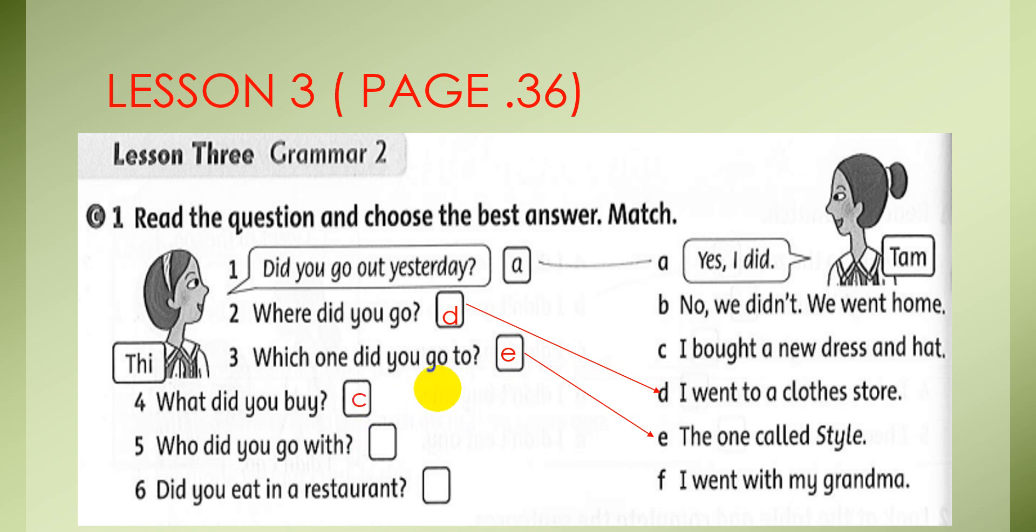C, I bought a new dress and hat. You match. And number 5, who did you go with? F, I went with my grandma. The last, did you eat in a restaurant? B, no, we didn't. We went home. Number 1, A. Number 2, D. Number 3, E. Number 4, C. Number 5, F. And number 6, B. You look carefully and match carefully, class.